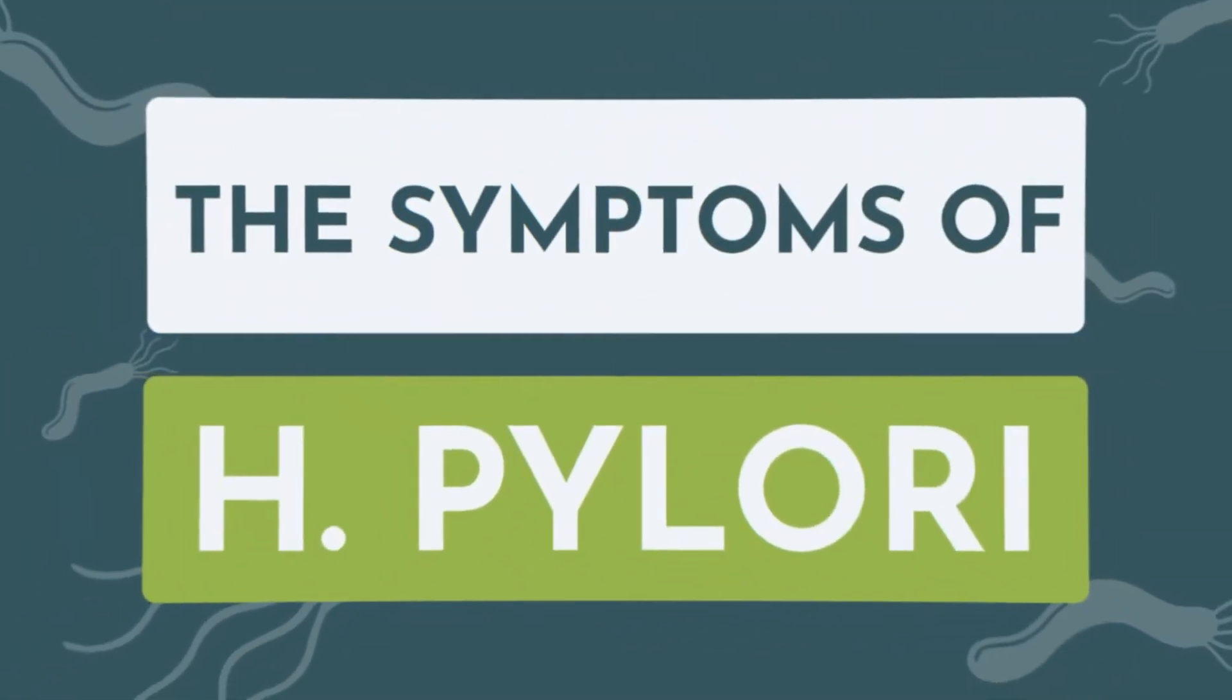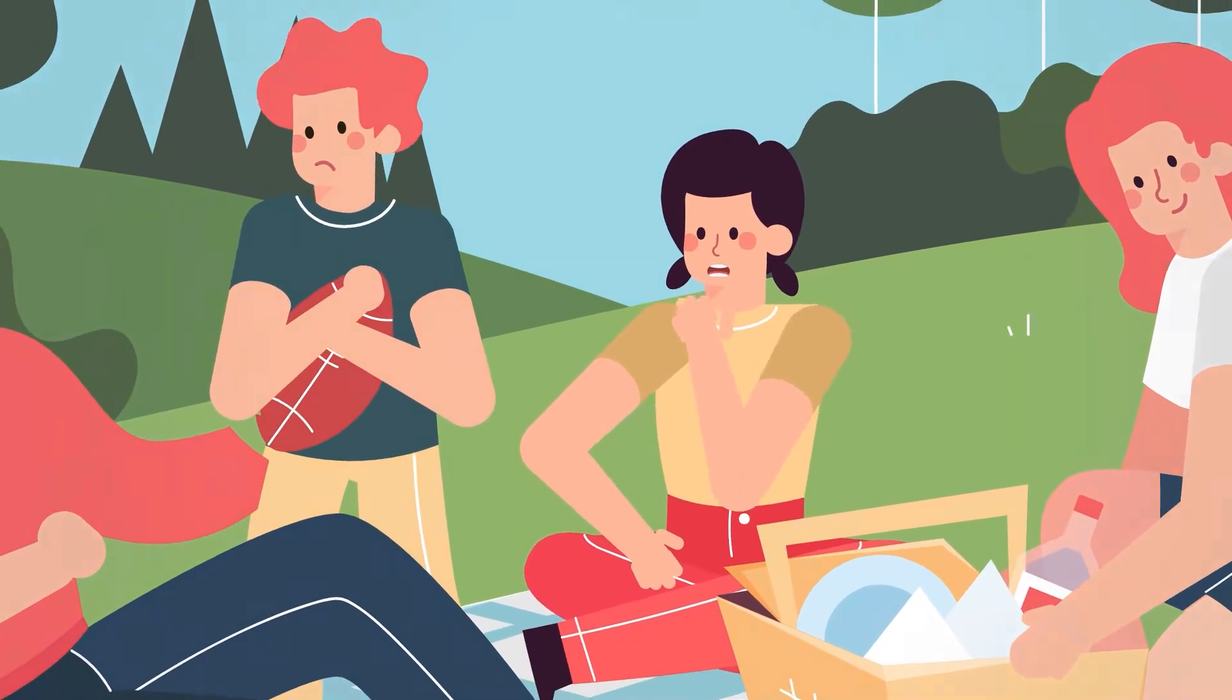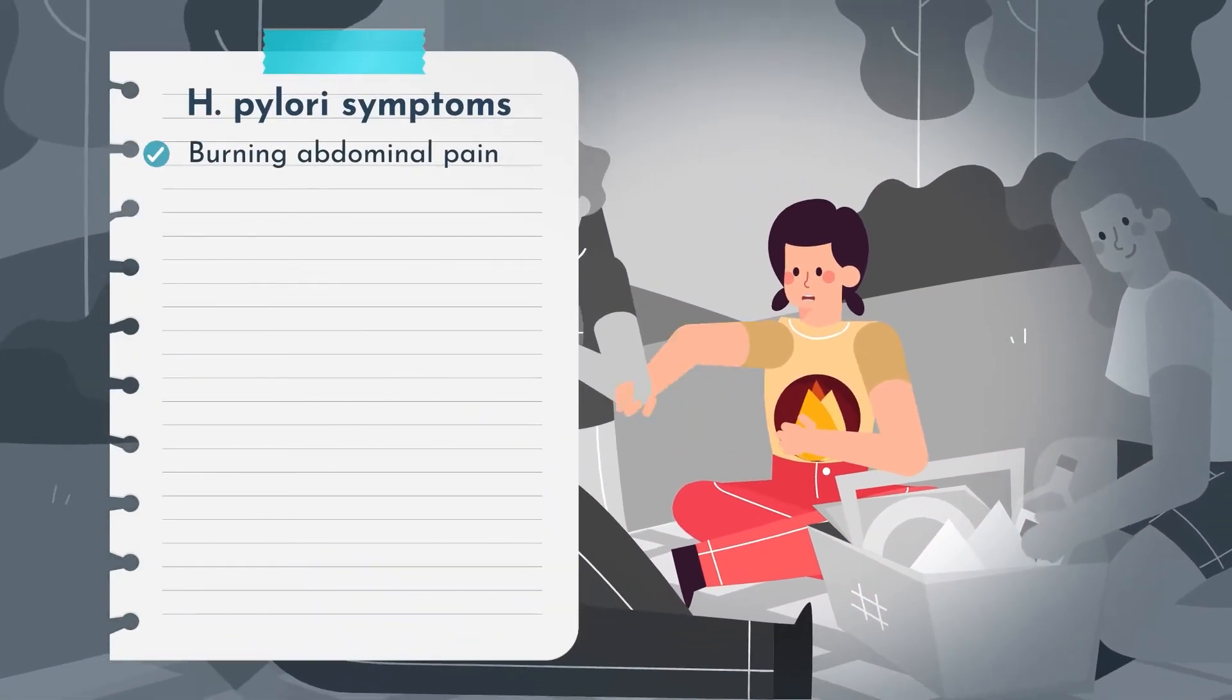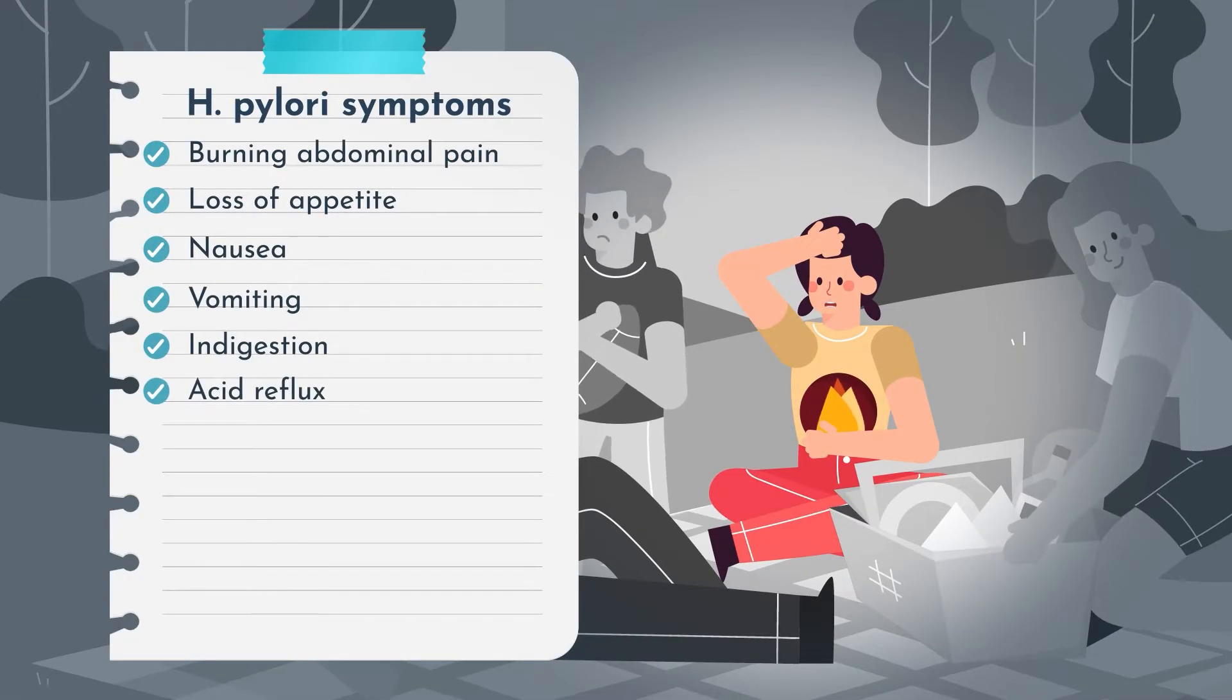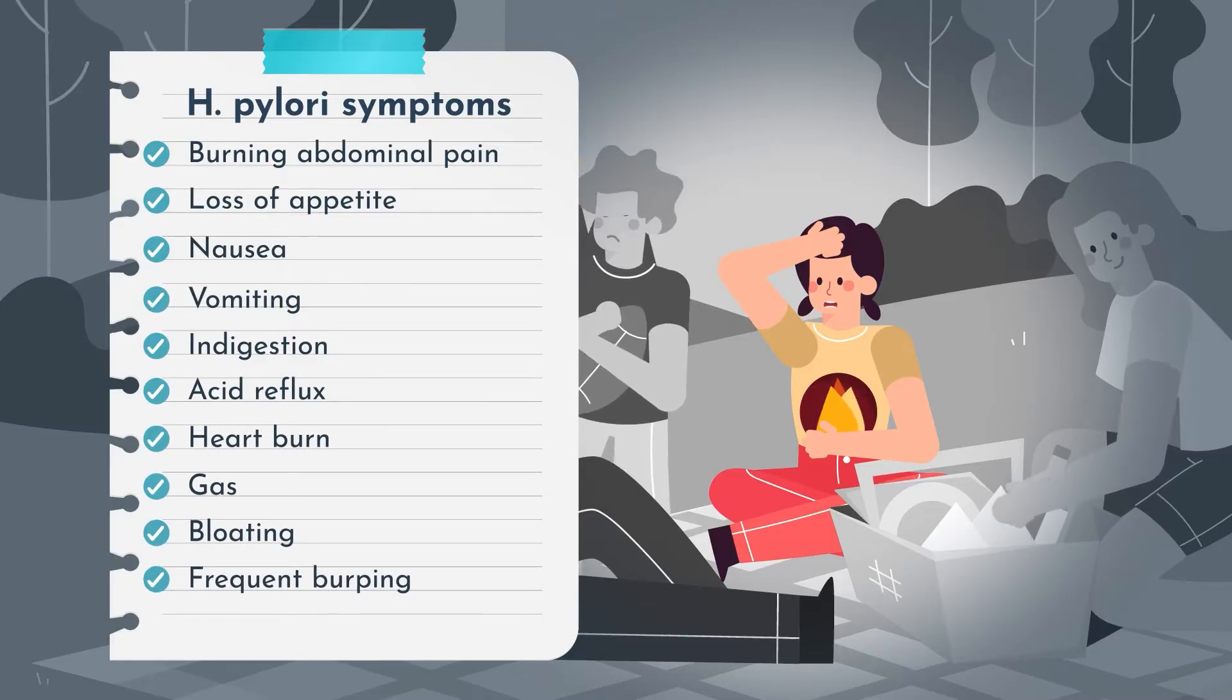Let's talk about the symptoms. Although many carriers of H. pylori are asymptomatic, when symptoms do occur, they can include burning abdominal pain, loss of appetite, nausea, vomiting, indigestion, acid reflux, heartburn, gas, bloating, frequent burping, and iron deficiency anemia.